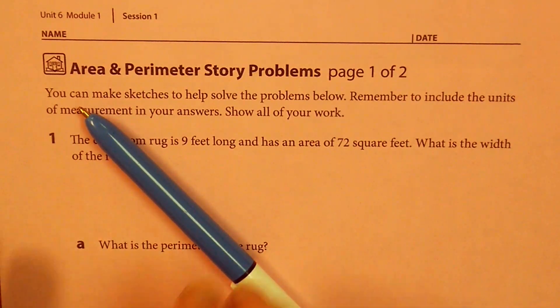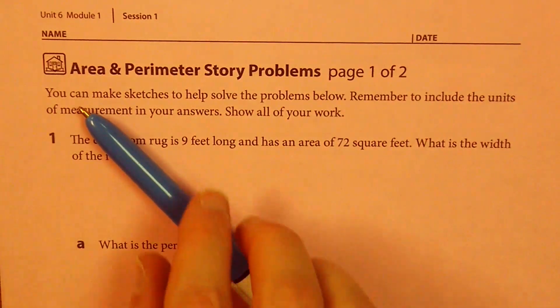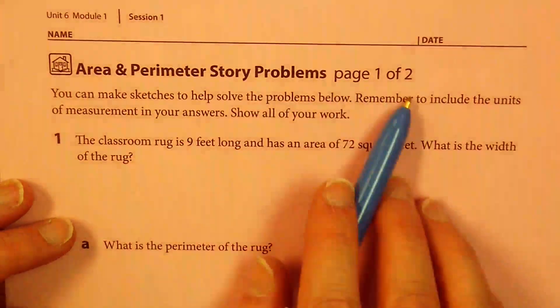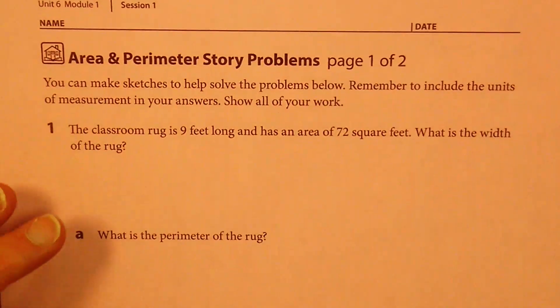Greetings! This is Unit 6, Module 1, Session 1. The name of this home connection is Area and Perimeter Story Problems. Two pages, name and number. Let's do this thing.